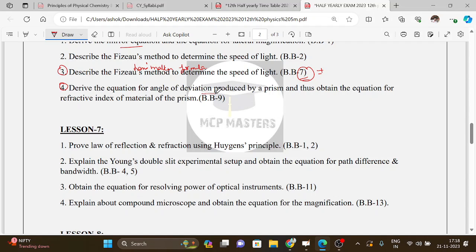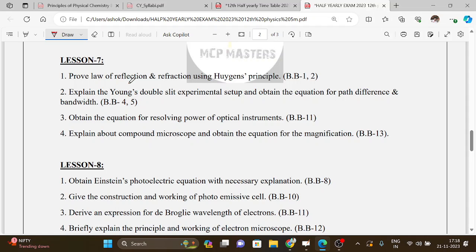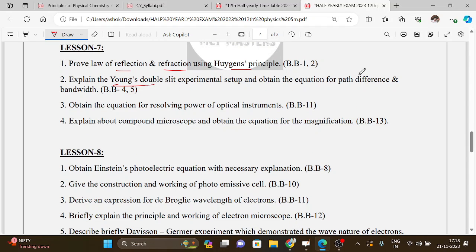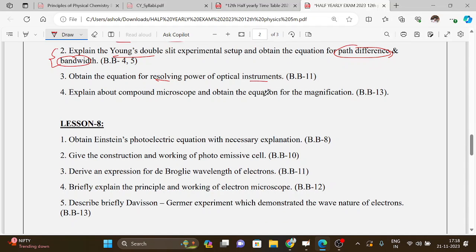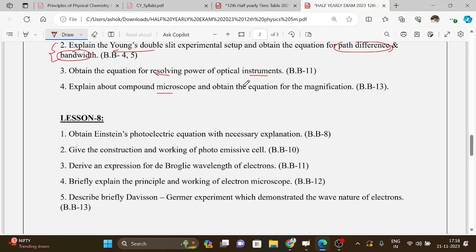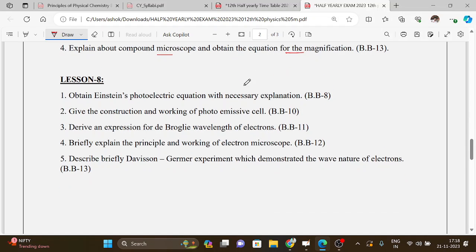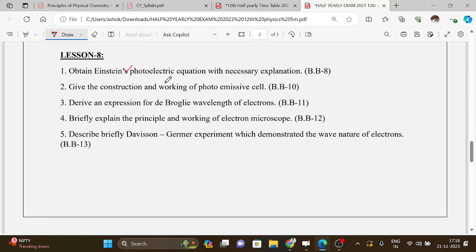Fourth question: derive the equation for angle of deviation produced by prism and obtain the angle for refractive index. Then Lesson 7: law of reflection and refraction using Huygens' principle. In Young's double slit experiment, obtain the path difference equation and bandwidth.